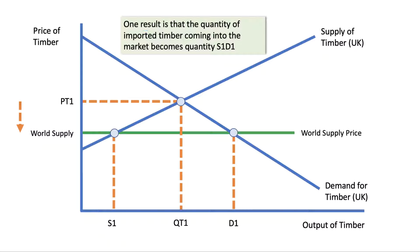There is quite a sizable proportion of timber demand now met by imports. Demand is D1, domestic production is S1, and the gap S1 to D1 represents the quantity of imports. In this situation you can see that imports might well dominate the total supply of timber in the UK economy.